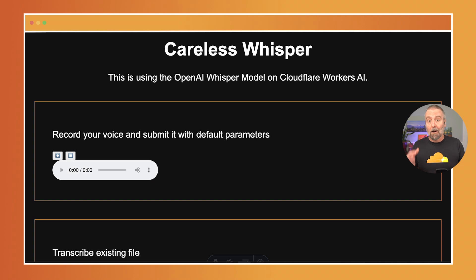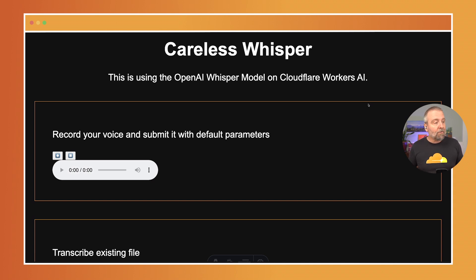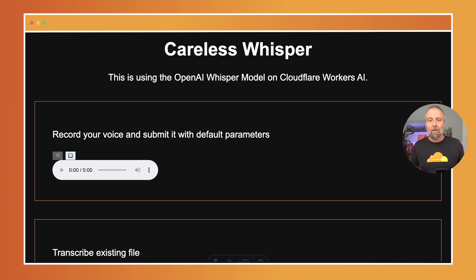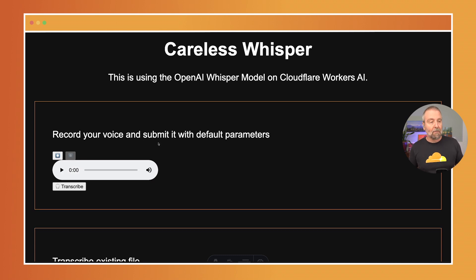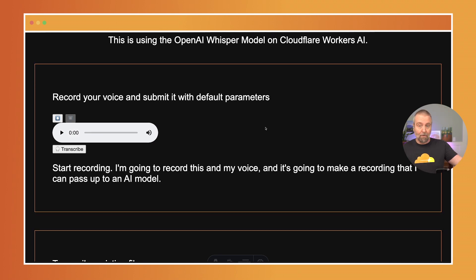So this is an Astro app that I'm hosting on Workers. It's a web app and I'm just using plain old standard HTML to show things off. The first example here is actually a recorder. I can click and start recording. I'm going to record my voice and it's going to make a recording that I can pass up to an AI model. I'll press stop and when I press transcribe it's going to send that recording up to Workers and come back with results.